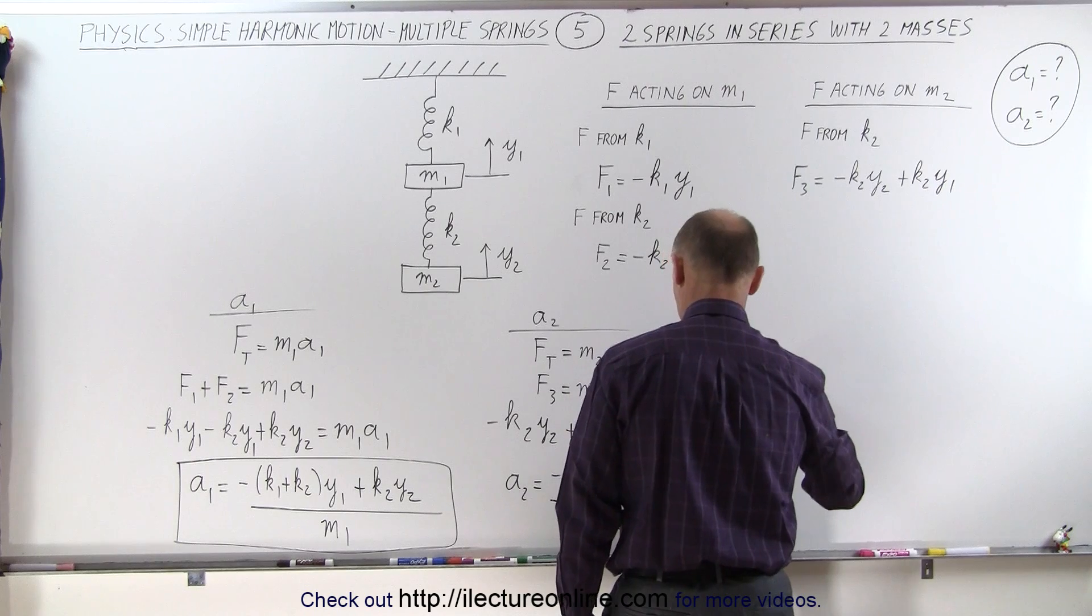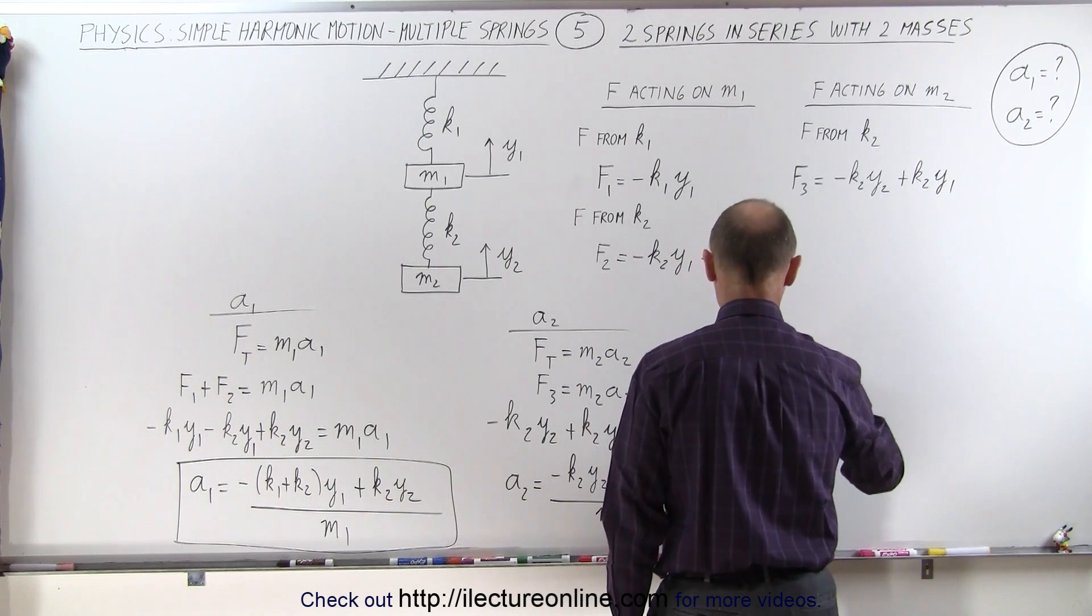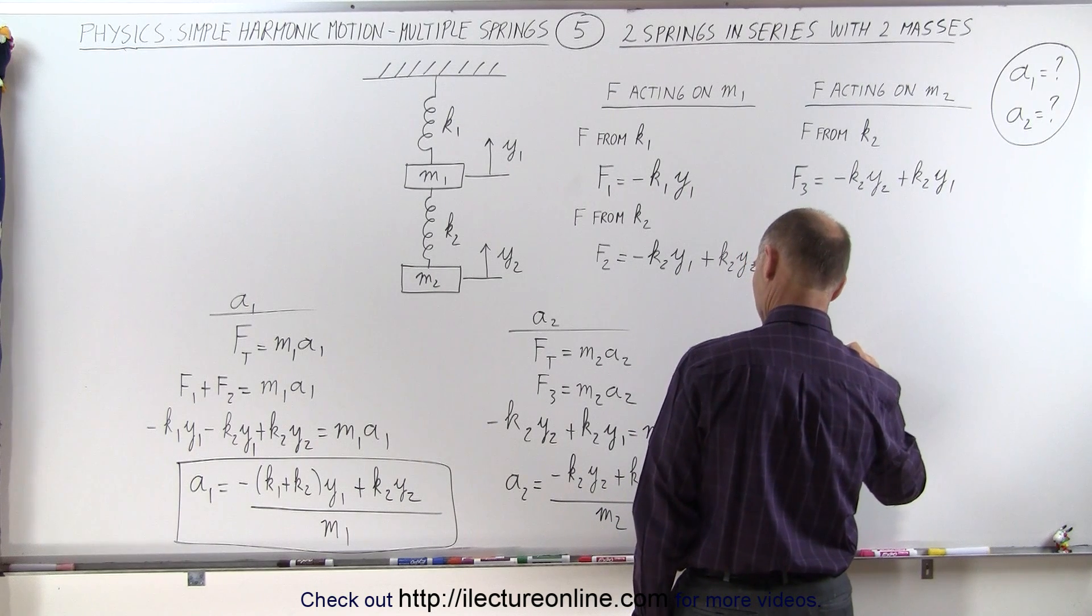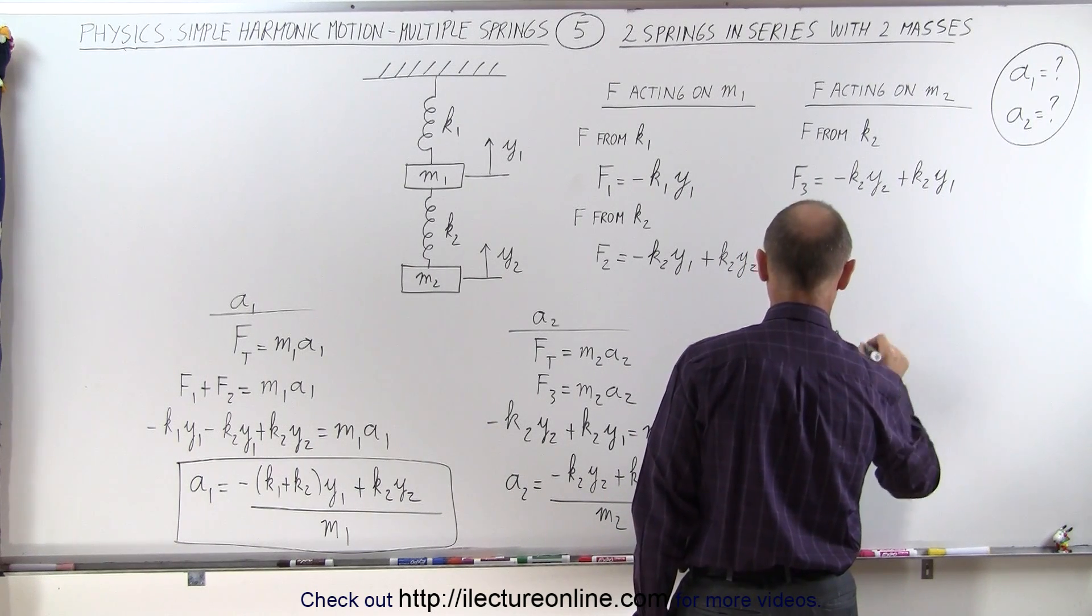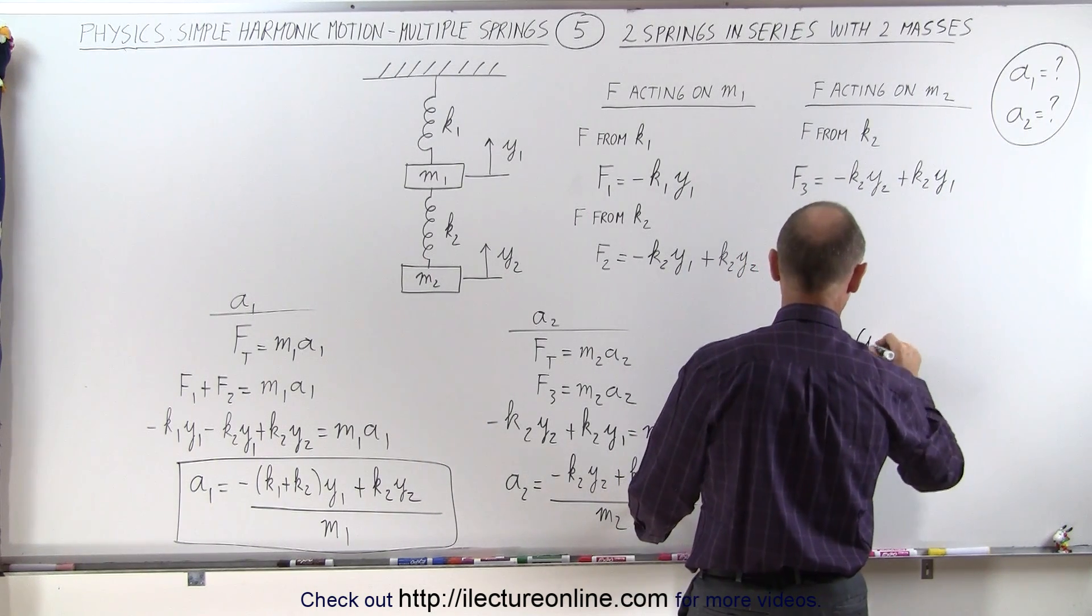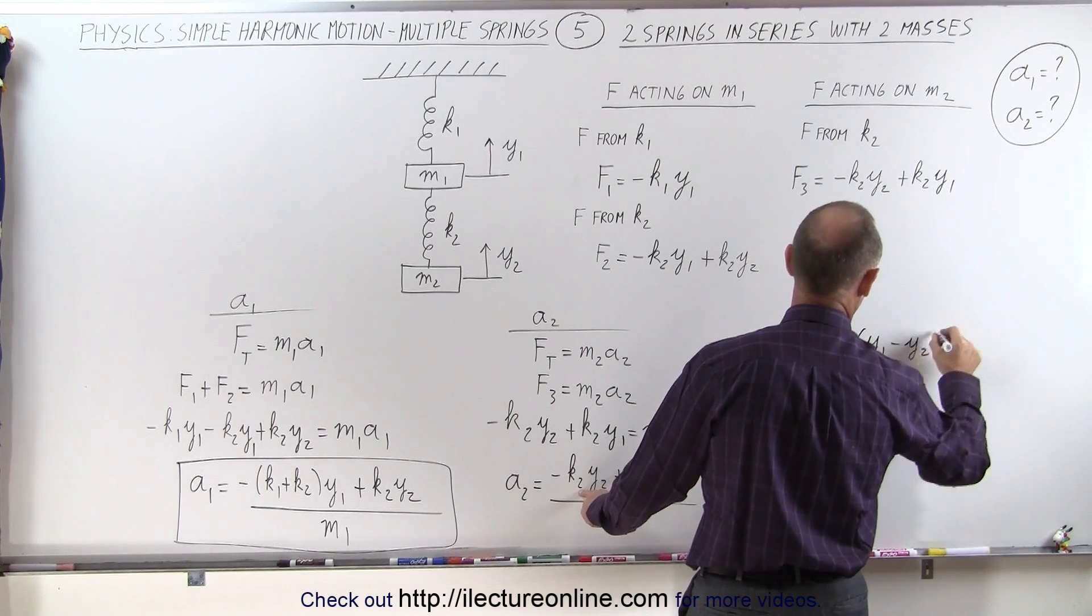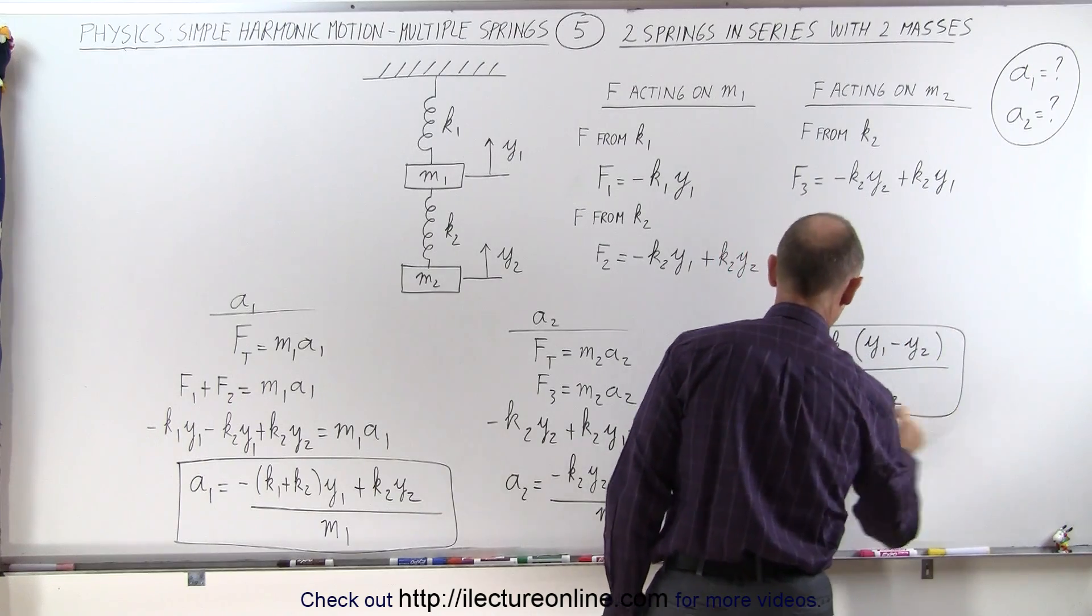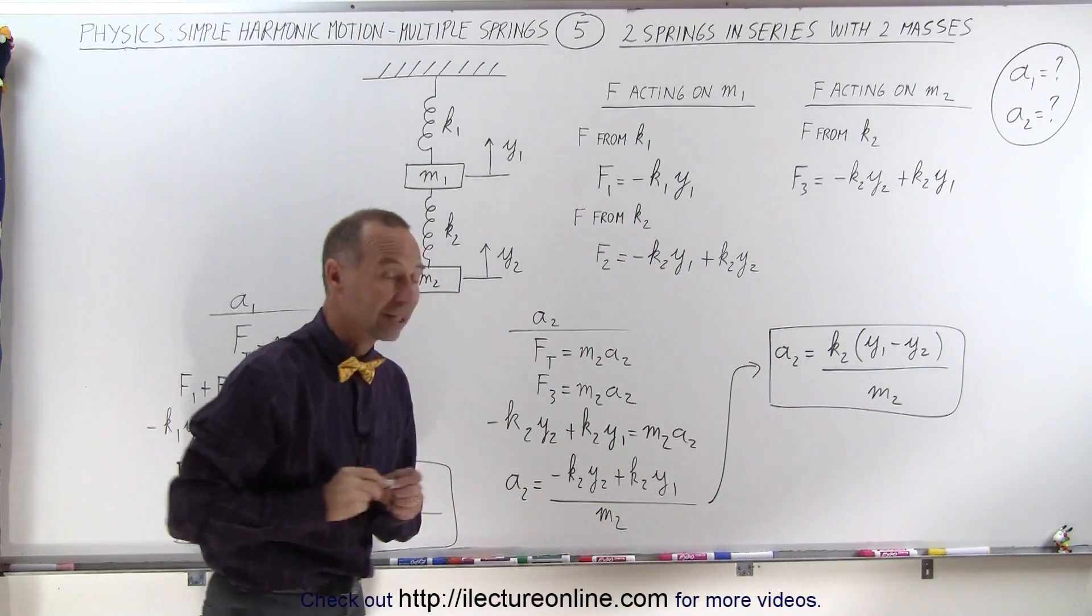So it's minus k2 y2 plus k2 y1 all divided by m2. And maybe if I factor out a k2, I could write a2 is equal to k2 times, I'll write y1 first, minus y2. It's a more compact form divided by m2. And so that might be a better way to write acceleration on the second mass.